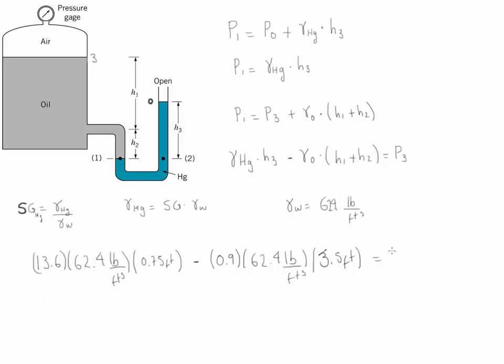And this is going to be equal to P3. Remember, P3 is the pressure at the interface and that's what we're looking for. After we multiply it out, we find that the value of P3 is going to be equal to 440 pounds per square foot.